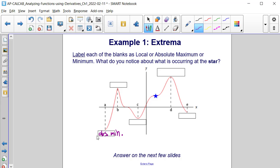And absolute minimum values can occur at endpoints. So a is considered to be an absolute minimum.